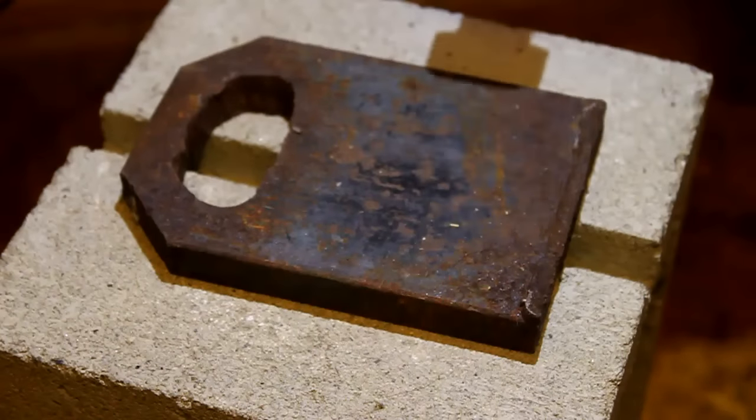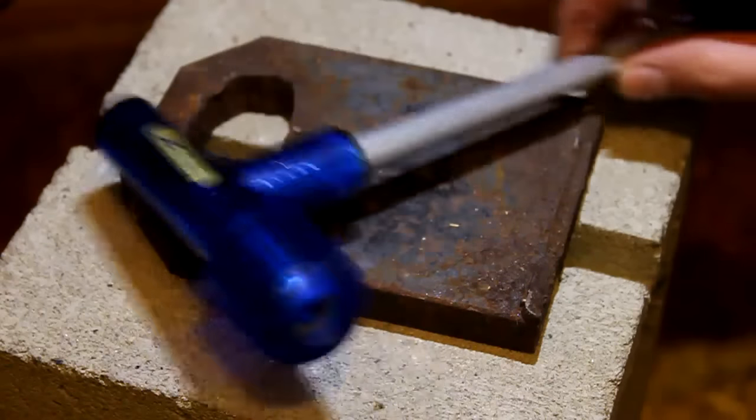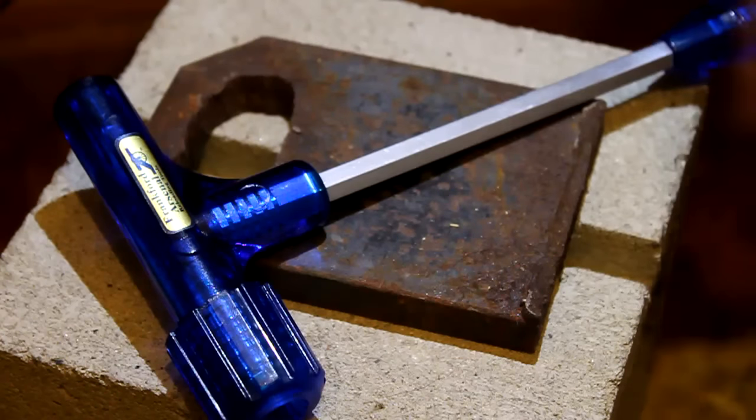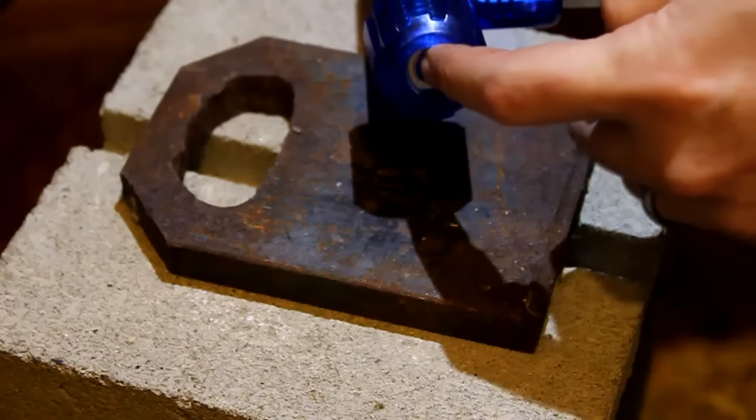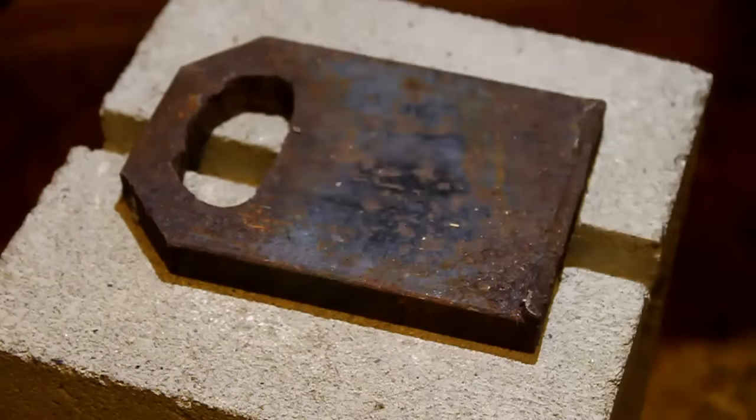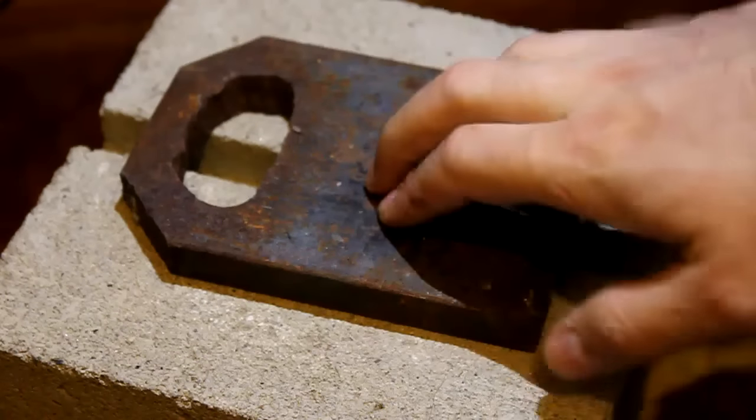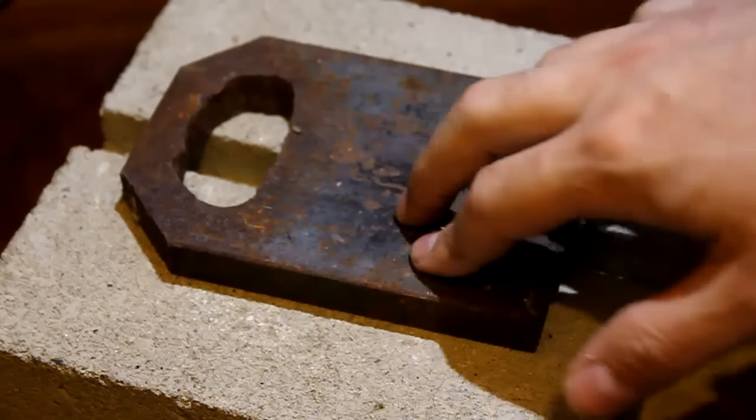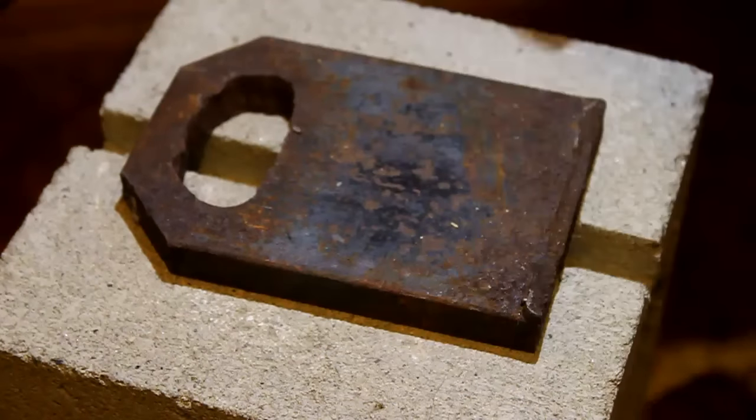Method number one is a kinetic puller. This method seems to be the most common and cost effective for most reloaders. A kinetic puller like this can be bought pretty cheap. The concept is that you insert your live round into this collet and then you whack this against a hard surface. Here I've got a steel plate sitting on a cinder block. I found that this works really well. I've tried different surfaces like wood or just concrete or just steel. This seems to be a good combination.